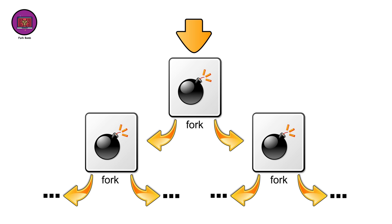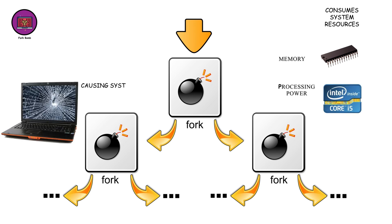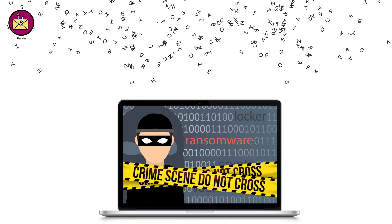Fork bomb. A fork bomb is a type of malware that consumes system resources such as memory or processing power to the point of causing system instability or failure. Fork bombs are often used in denial of service attacks to overwhelm a system and render it unusable.